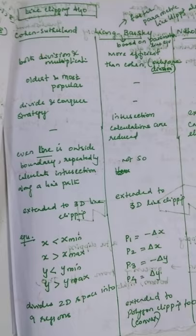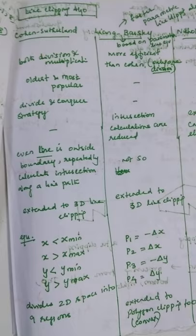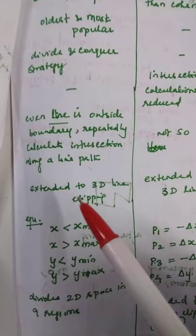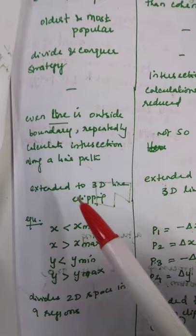The Cohen-Sutherland algorithm is the oldest and most popular algorithm. It uses a divide and conquer strategy. Even if a line is outside the boundary, it checks repeatedly. Here we calculate intersections along a line path. This algorithm can be extended to 3D line clipping.